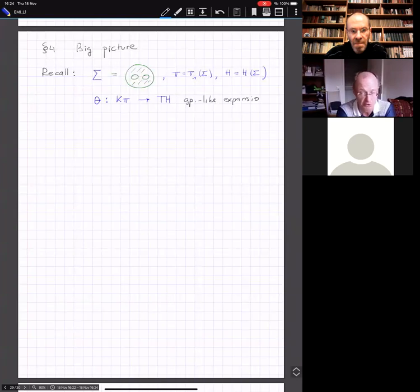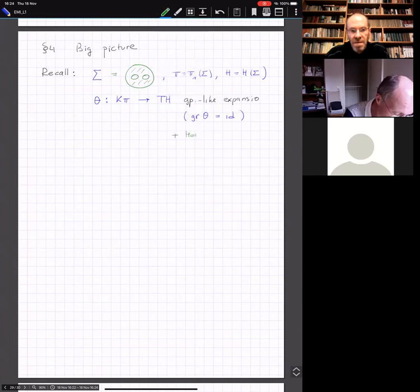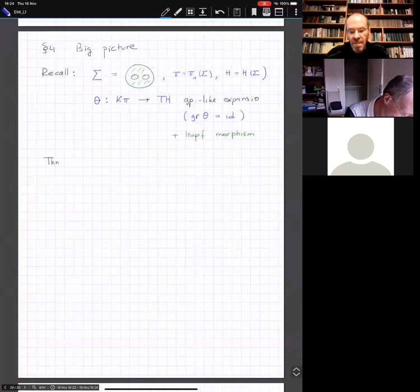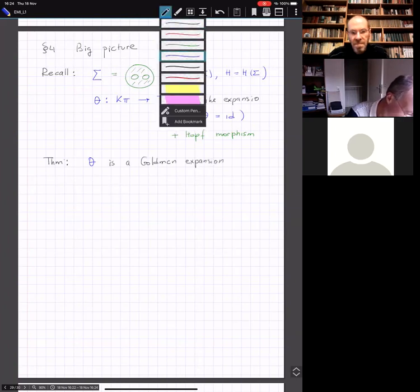We assume that this is a group-like expansion, which means it's a Hopf algebra homomorphism. There is a filtration on K pi, and the associated graded of theta is actually equal to identity. This means that associated graded of theta is the identity plus Hopf morphism. Now we had a theorem with many parts and many authors.